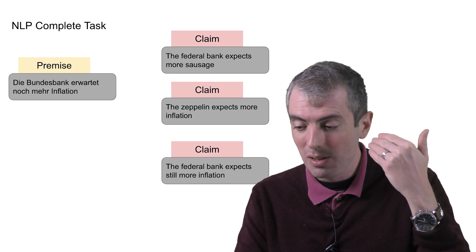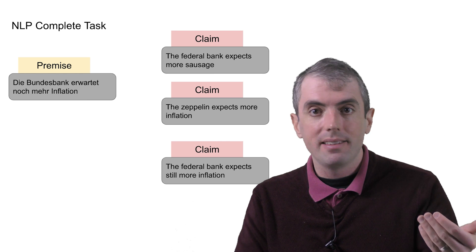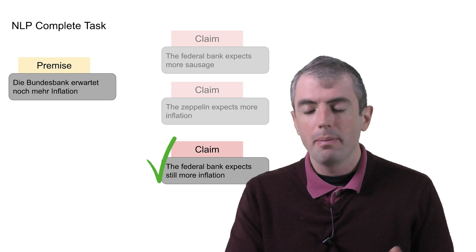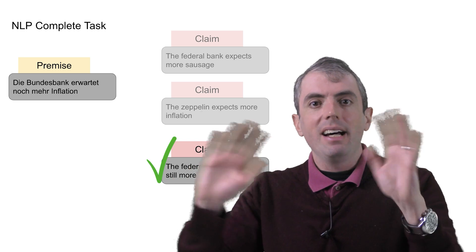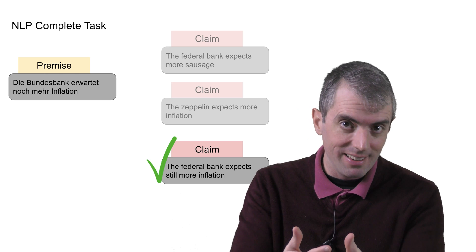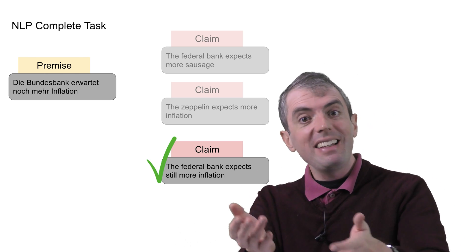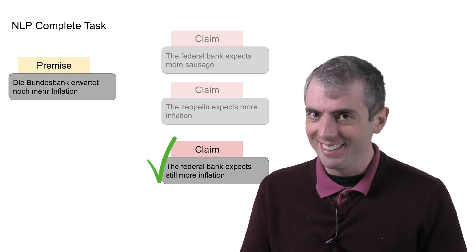and you say that the correct translation is whatever your NLI system says is actually entailed. In this case, the federal bank expects still more inflation. You can likewise set up or reduce, in the CS theory lingo, summarization, question answering, or just about any other NLP task to entailment. Although some reductions are easier than others.